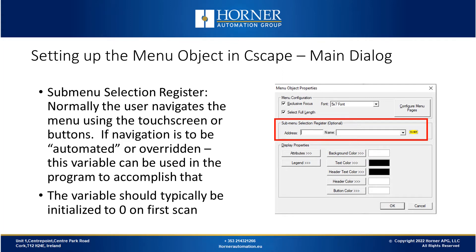The next option is a sub-menu selection register or sub-menu selection variable. If you want your navigation to be automated or overridden, this variable can be used in the program to accomplish that. It's an optional feature — essentially a variable containing a numerical value indicating where the user is in the menu navigation. If you write to that register, you can automatically cause navigation to a specific location in the menu. Initialize it to zero so the user starts at the highest level; a non-zero value will start them deeper in the menu.